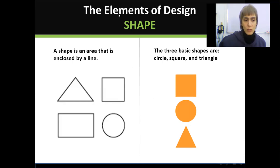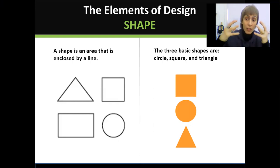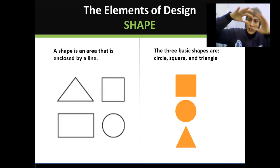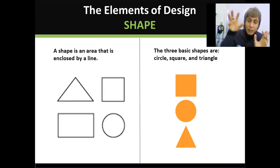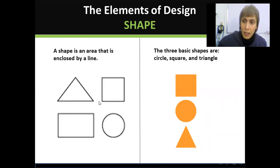So these are lines. But when they enclose something, it makes it look like a two-dimensional shape. If I have this kind of line, the enclosed area inside makes it look like a circle. So an area that is enclosed by a line creates shape.